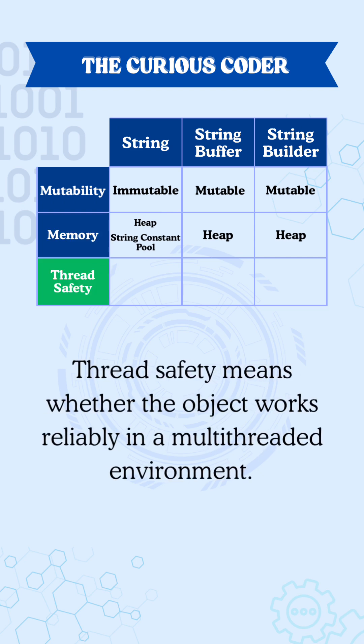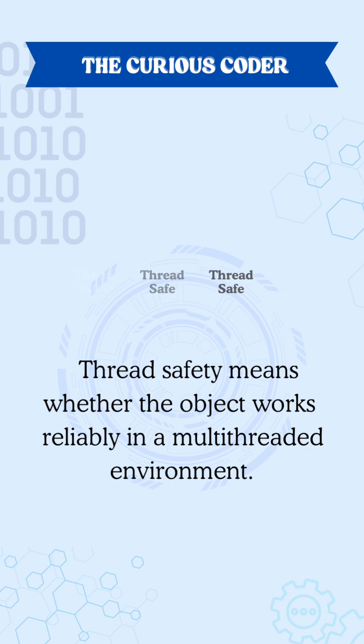The third aspect is thread safety. Thread safety means whether the object works reliably in a multithreaded environment. String and StringBuffer are thread safe, while StringBuilder is not thread safe.